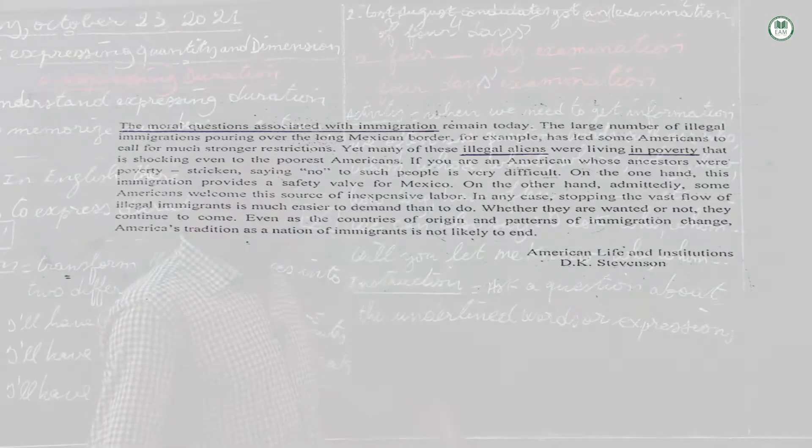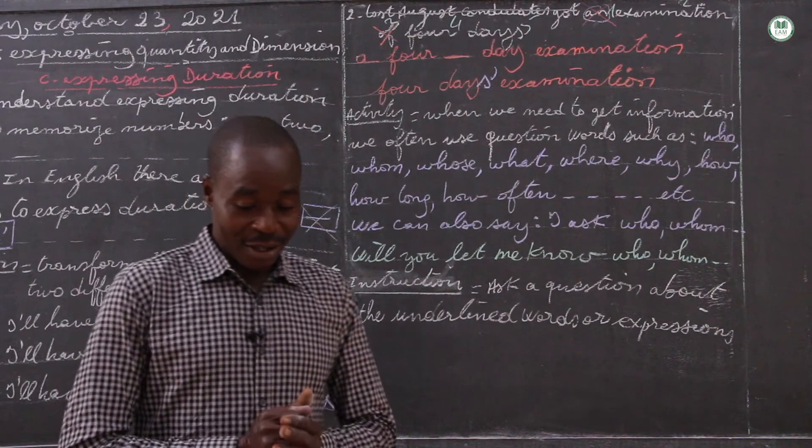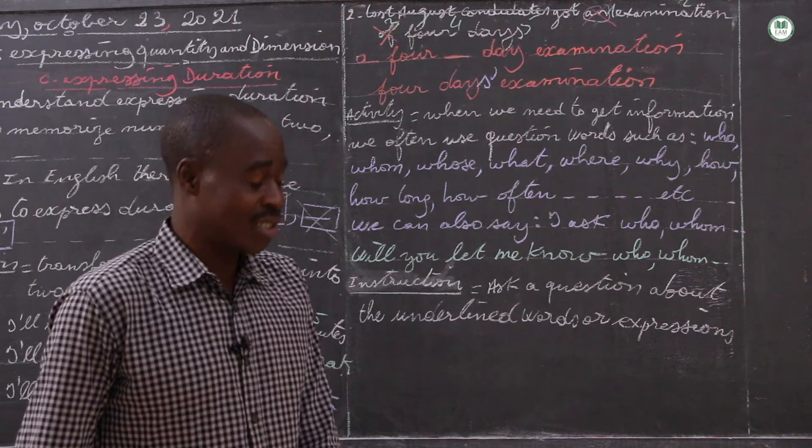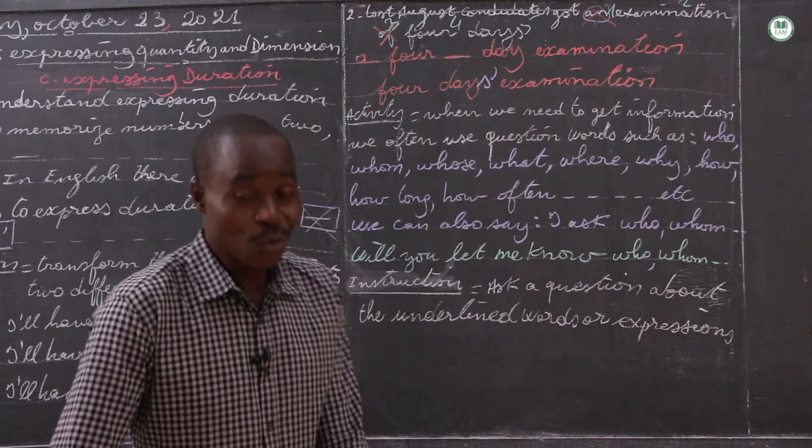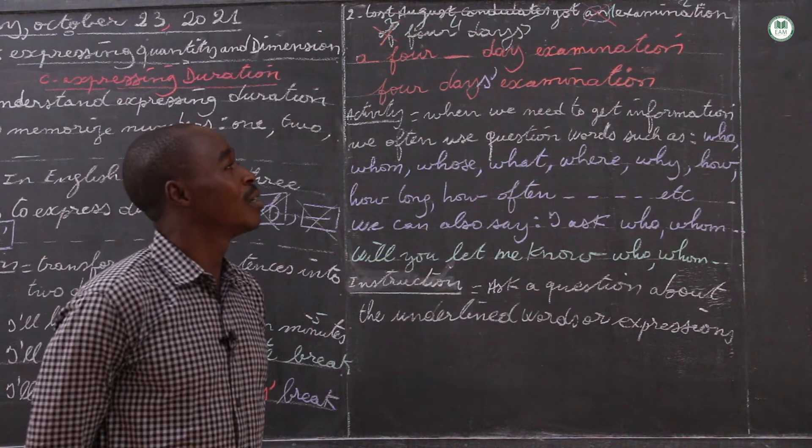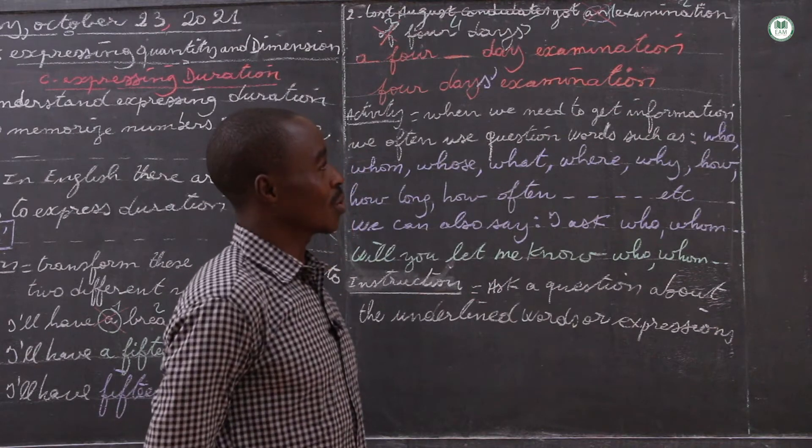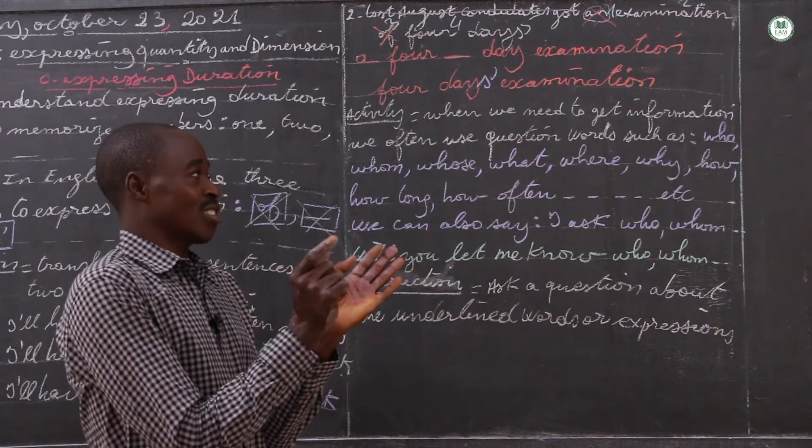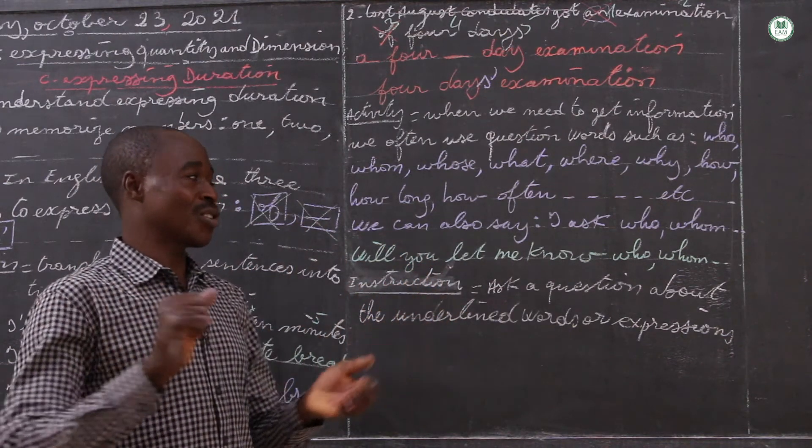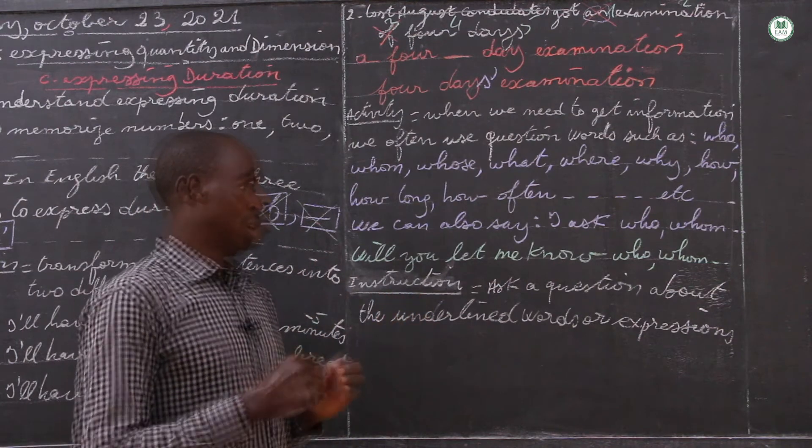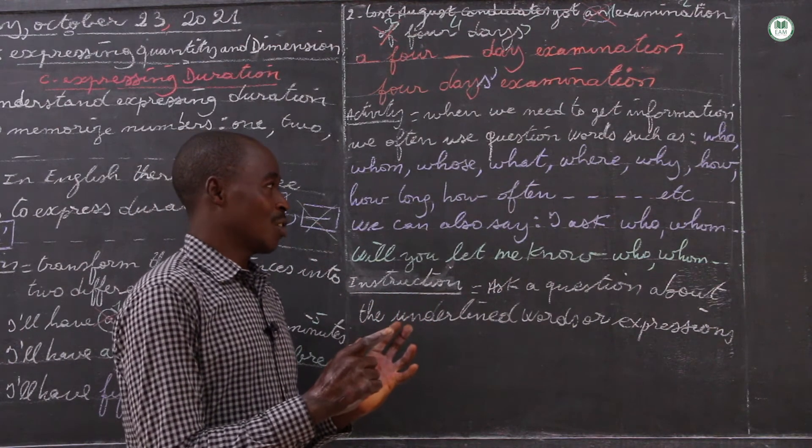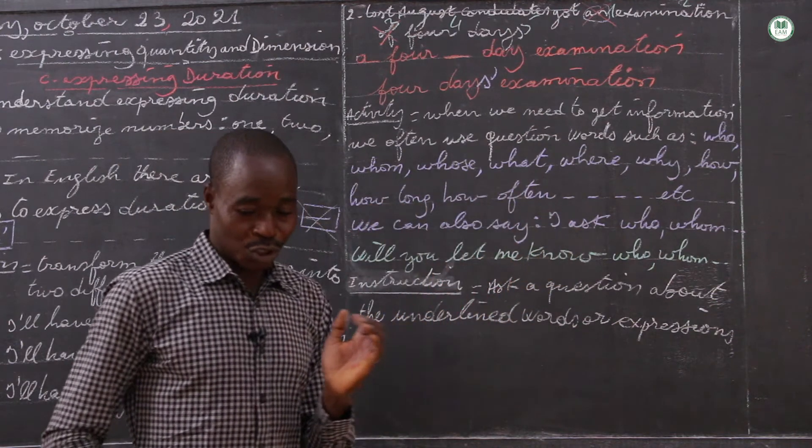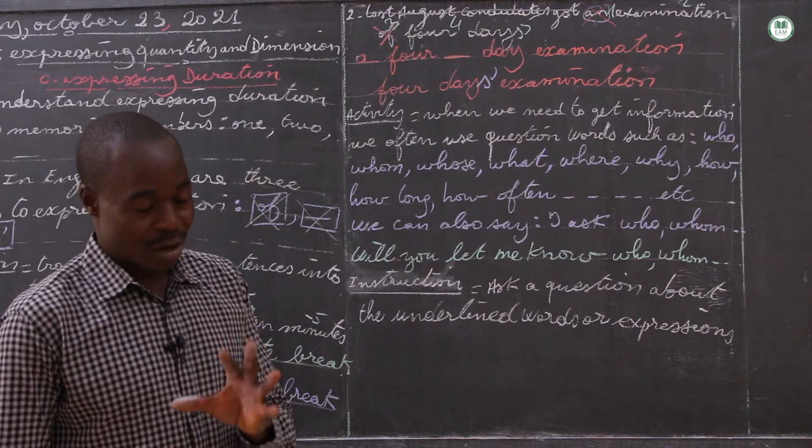American lives and institutions. This is the text. Now, as I said, here we have the first sentence of the text: the moral question associated with immigration. It is underlined. It is said to ask a question about this expression. Now people, it's due to their competence to use a question word to substitute the moral question associated with immigration.